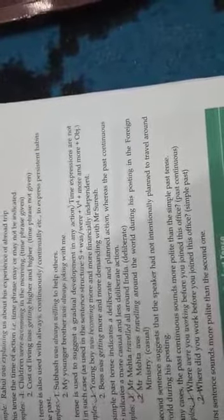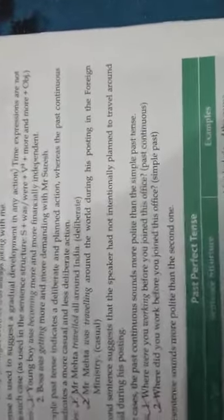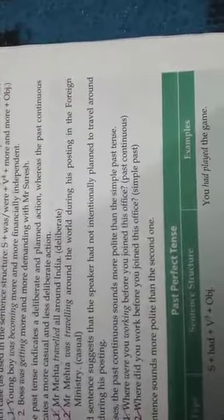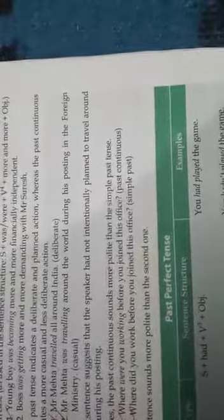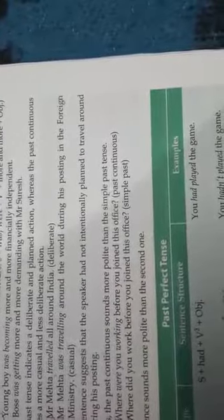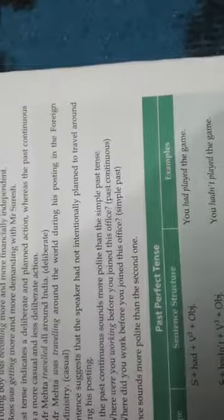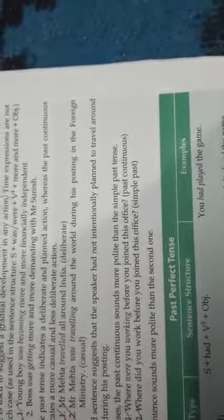The simple past tense indicates a deliberate and planned action, whereas the past continuous tense indicates a more casual and less deliberate action. Example: 'Mr. Mehta traveled all around India' — this is deliberate. The second sentence suggests that the speaker had not intentionally planned to travel around the world during his posting in the foreign ministry — this is the casual sense.